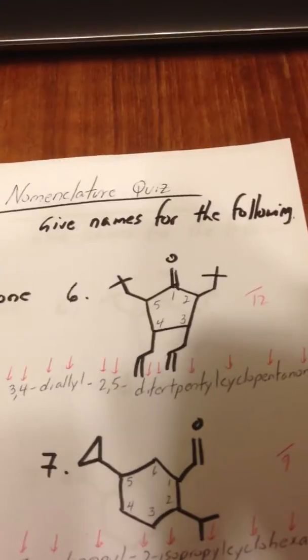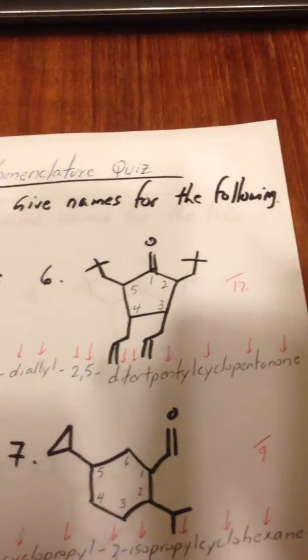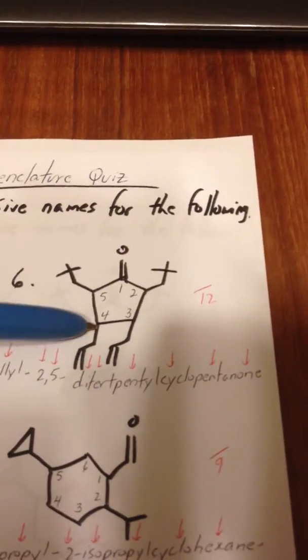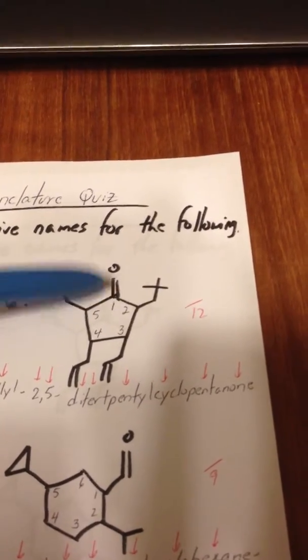In this one, we have an allyl group. An allyl group looks like a vinyl group, except it has an extra elbow.